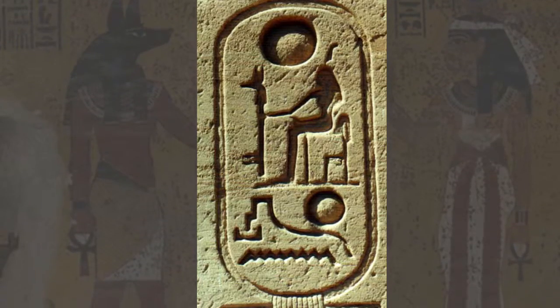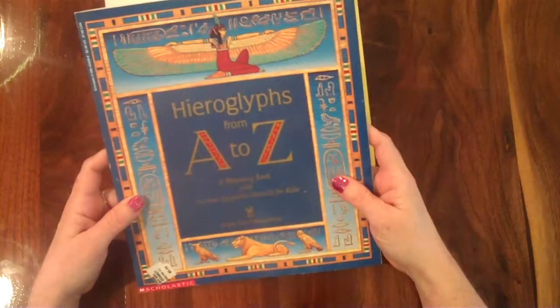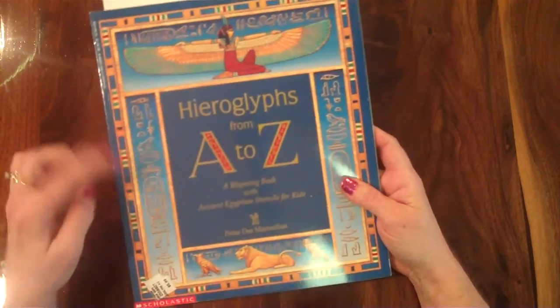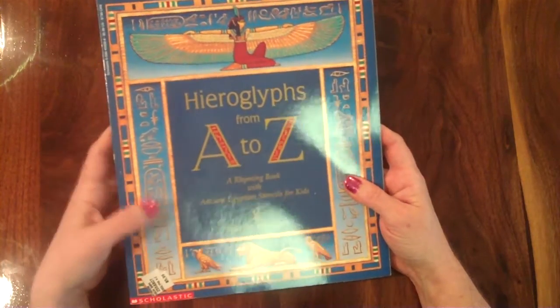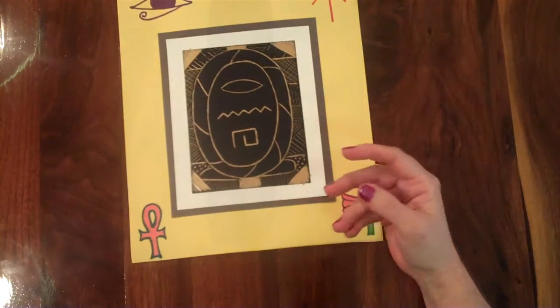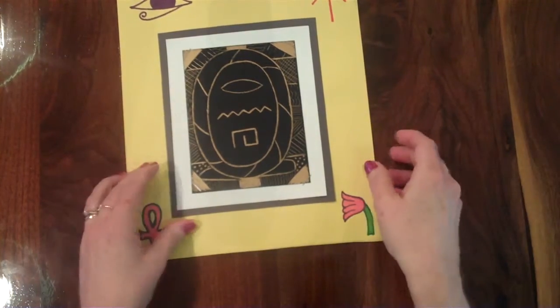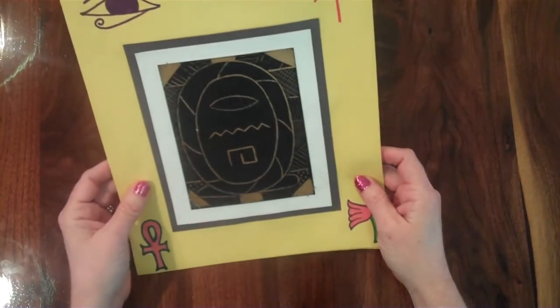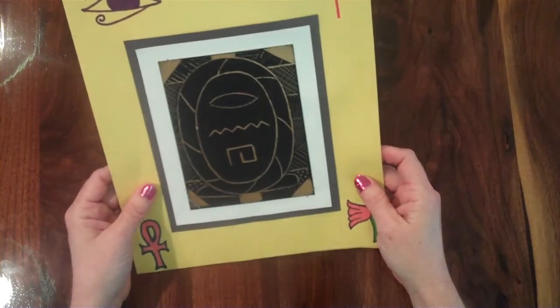And I'm going to be using this book, Hieroglyphs from A to Z, to help me make the hieroglyphs that go in the cartouche. So the first thing I need to do is make the cartouche design, and at the very end I will show you how to put it all together.